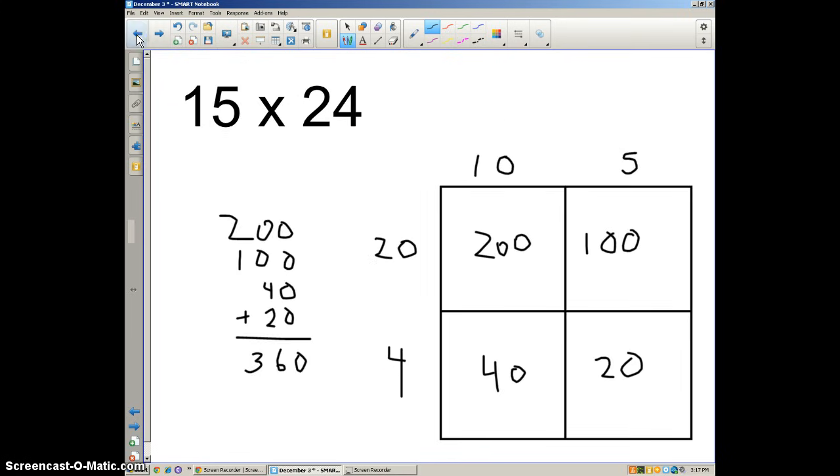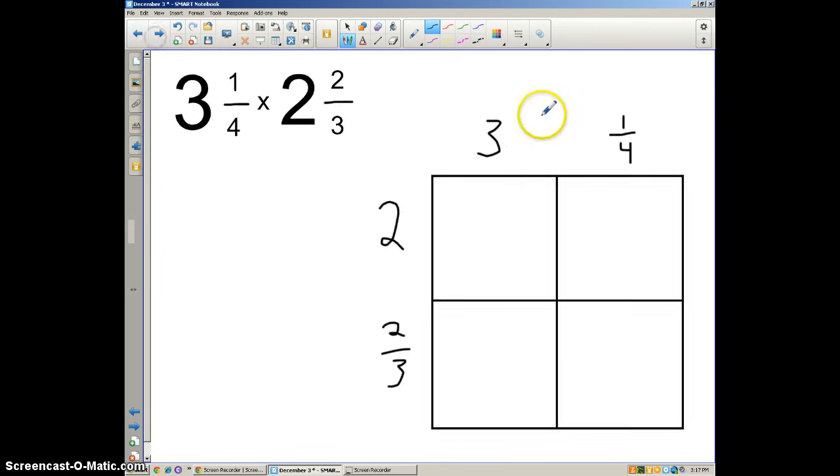Okay, so you can see the similarities here. Took the 15, made it 10 and 5 by breaking up by place value. Same thing here, taking the 3 and 1/4. We're saying, let's break up the whole number on one's part and the fractions on the other part. So now you're going to multiply the length and width for each of these parts.